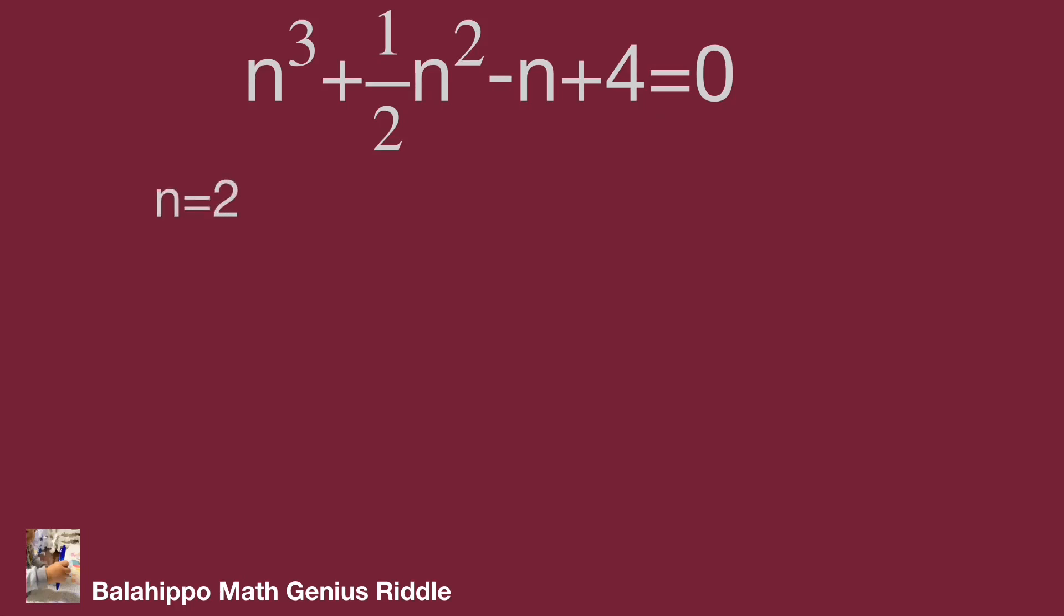When n equals 2, then the equation becomes 2 cubed plus 1 over 2 times 2 squared minus 2 plus 4 equals 12, not equal to 0.